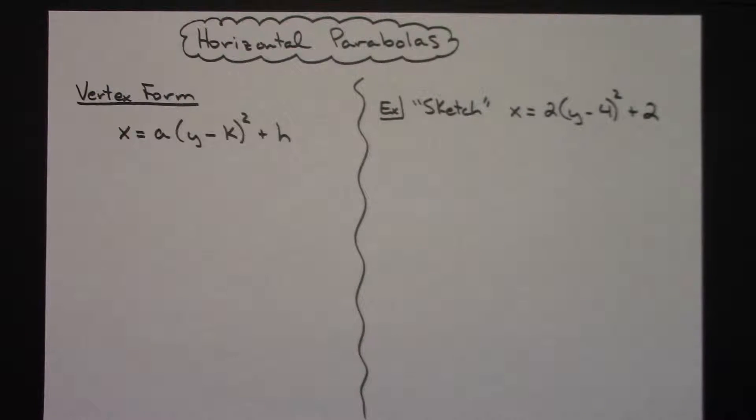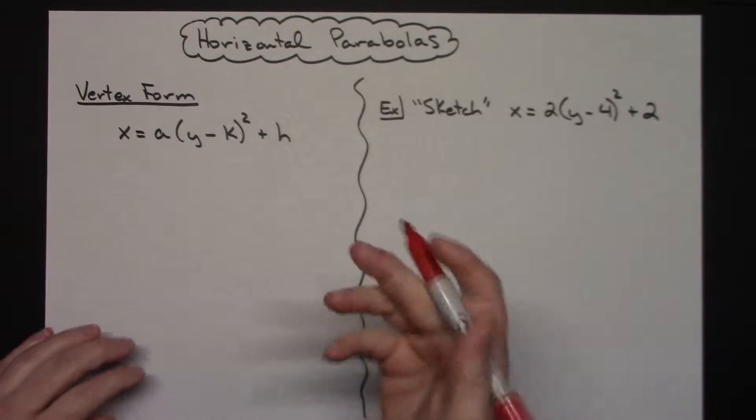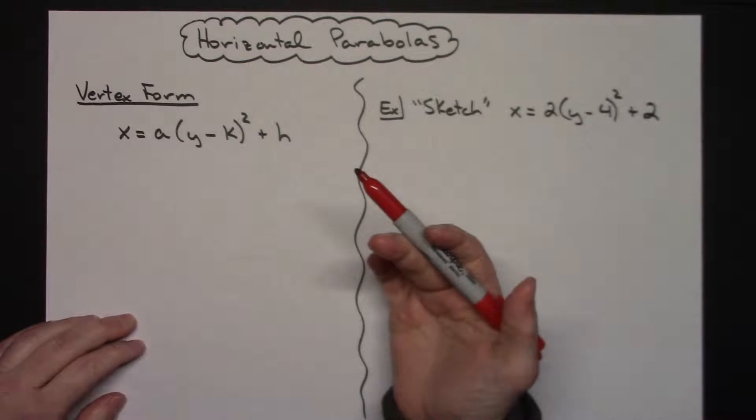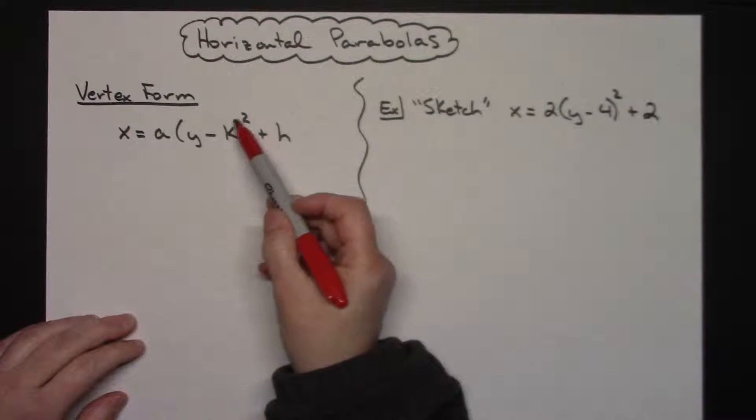Hopefully you have the concept here of a horizontal parabola. Instead of having your x value squared, you're going to have your y value squared.